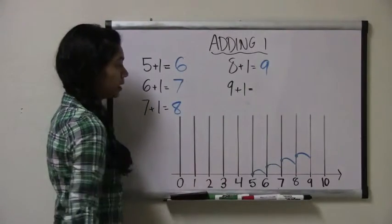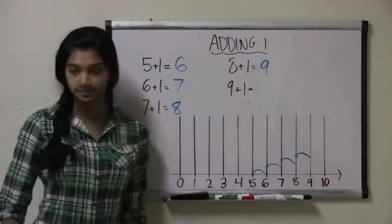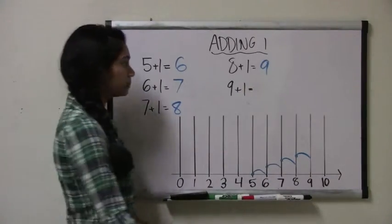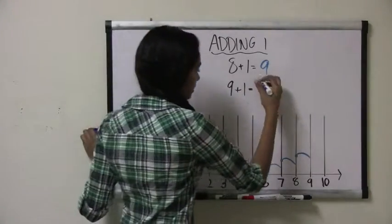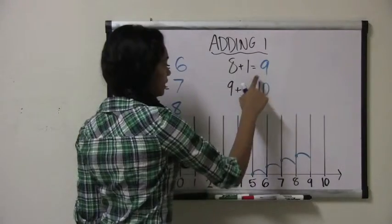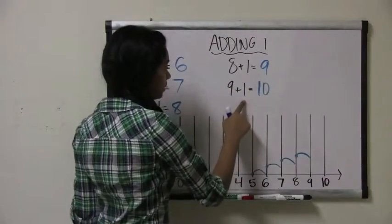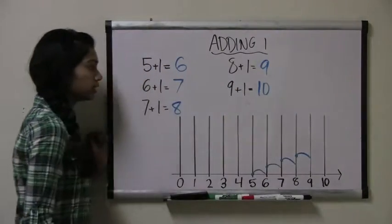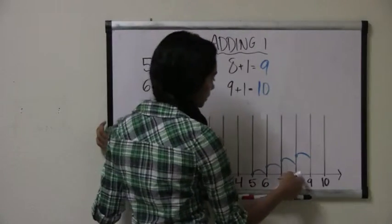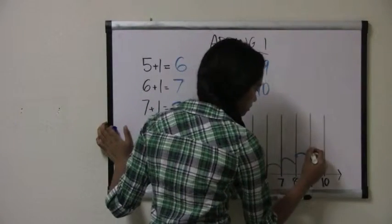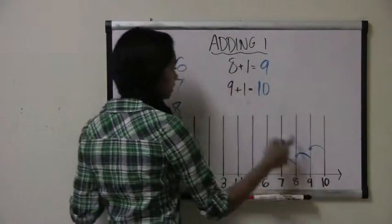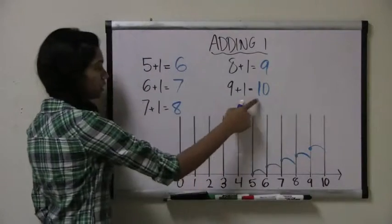So can everyone guess what 9 plus 1 might equal? Yep, it equals 10. Because 10 comes after 9, and 9 plus 1 comes after 8 plus 1. So let's check this on the number line. So we start with the number 9, and we jump one spot to the number 10. So 9 plus 1 equals 10.